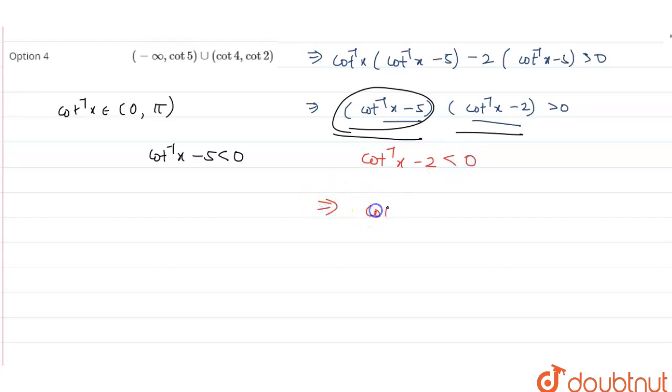So this gives cot⁻¹x is strictly less than 2. And we know that cot⁻¹x is a decreasing function. So this gives x is strictly greater than cot(2). So which implies x belongs to the interval (cot 2, ∞).